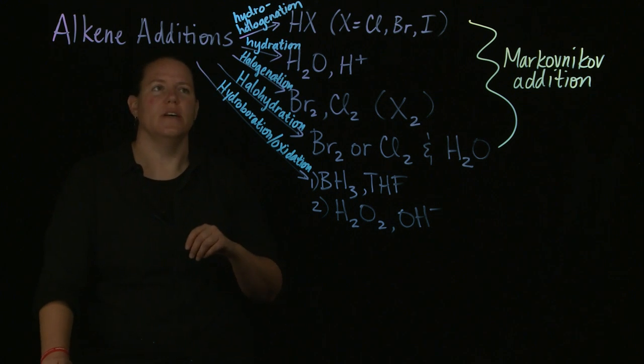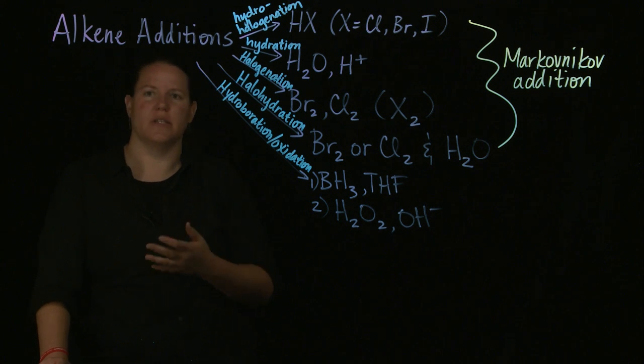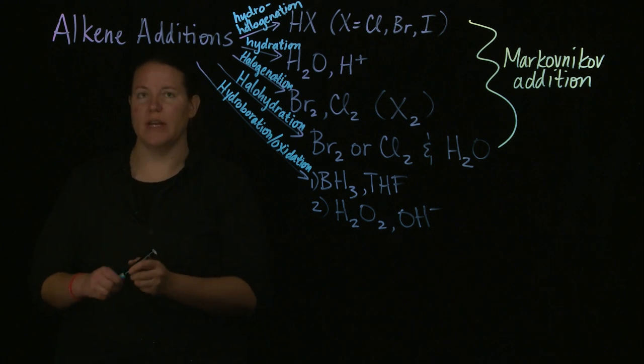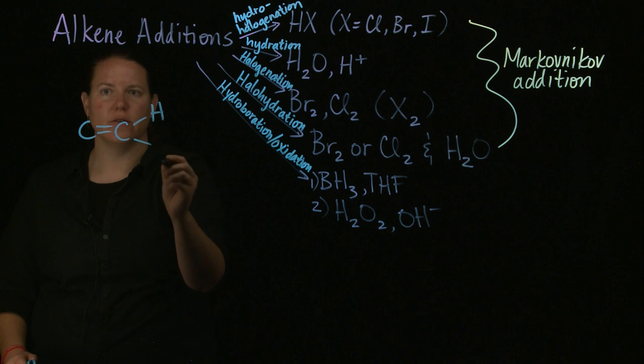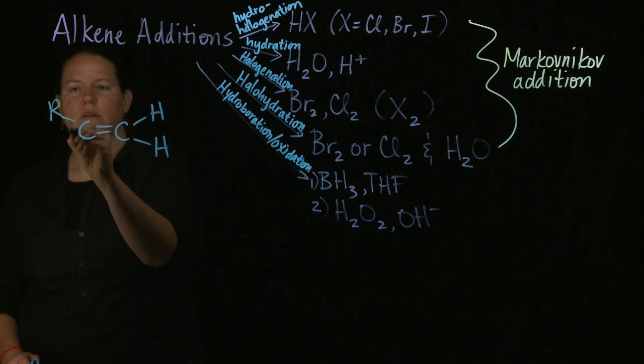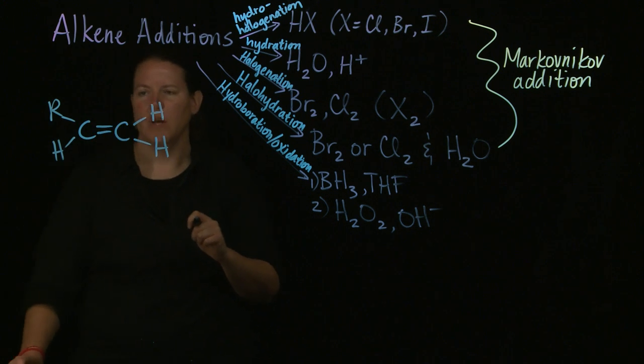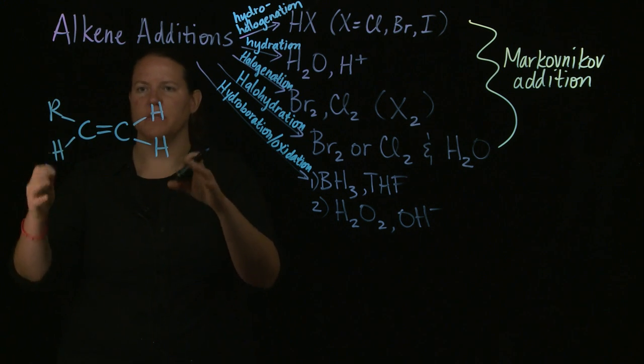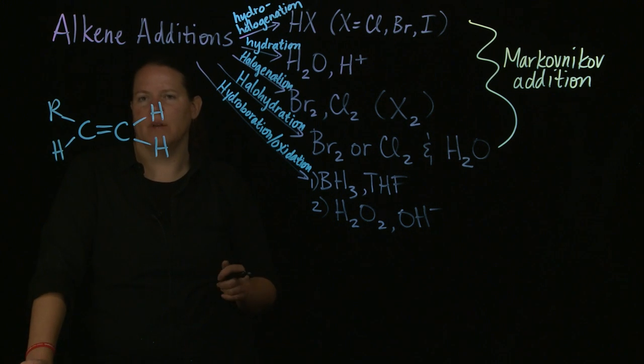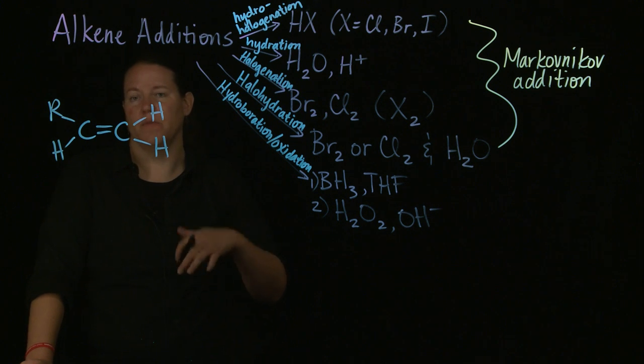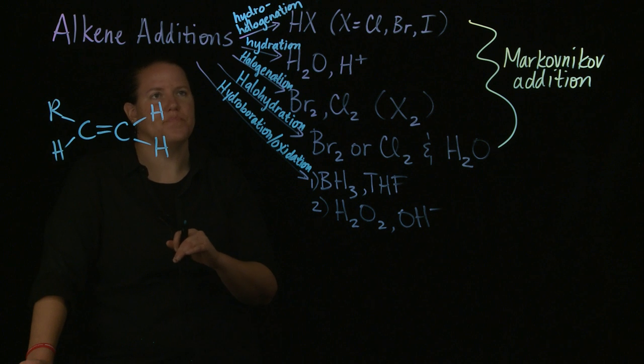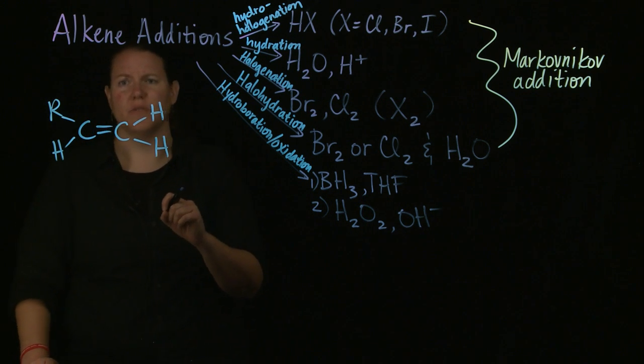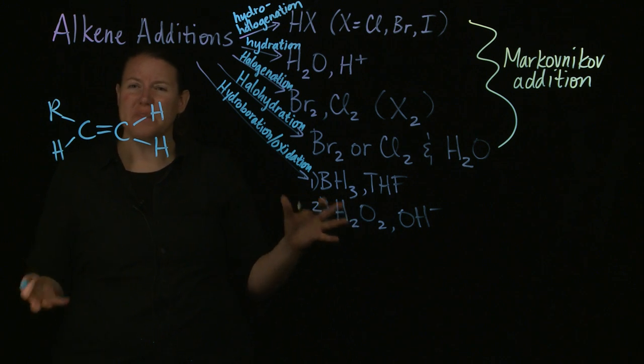So in terms of alkene additions, we can add several things to an alkene. Remember that an alkene has the general look of a double bond between two C's and what I add to either side of those C's can vary wildly. I'm adding an R on one side. I'm making this asymmetrical or an unsymmetrical alkene. The R group would be some kind of carbon chain. This is a terminal alkene. Each of these has its own name.